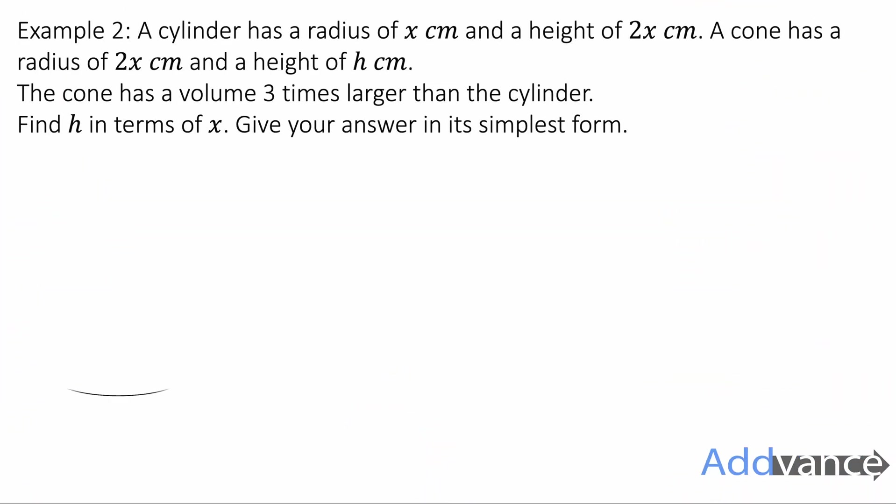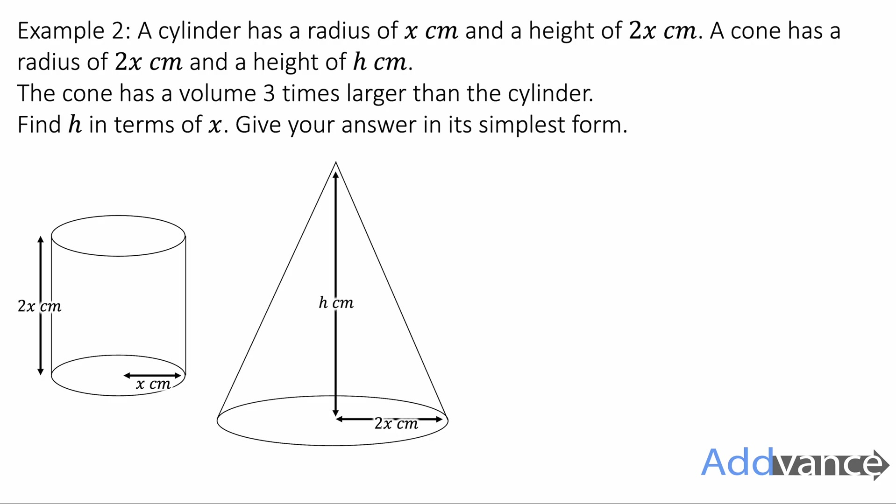Let's look at example two now. A cylinder has a radius of x cm and a height of 2x cm. A cone has a radius of 2x cm and a height of h. The cone has a volume three times larger than the cylinder. Find h in terms of x. Give your answer in its simplest form. I would recommend pausing the video now and trying this yourself. How far can you get with this question?